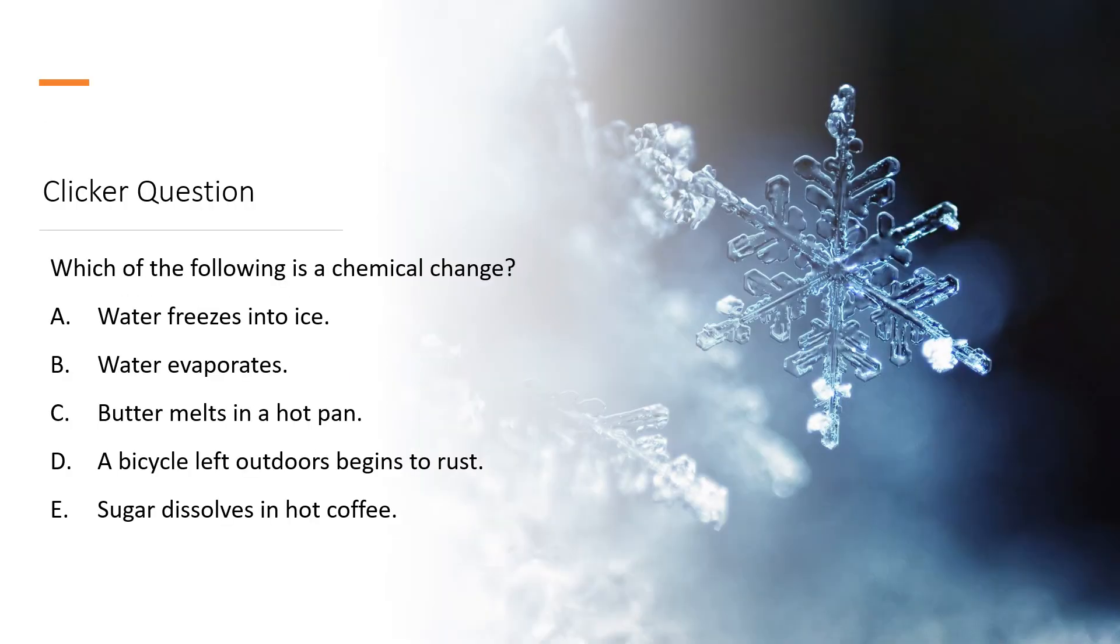So this clicker question is asking, which of the following is a chemical change? Well, let's analyze this. Water is H2O, liquid water. And when it changes into ice, it's still water. It's just going from the liquid state to the solid state. When water evaporates, we're starting with liquid water, and it's ending up as water in the gas phase. That's sometimes called steam, sometimes called water vapor or humidity, but it's still water once it's in the gas phase.